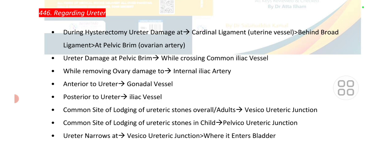During hysterectomy, the ureter is damaged at the cardinal ligament. If it is not present in the option, then choose behind the broad ligament. If that is also not present, then choose at the pelvic brim — ureter damage at the pelvic brim while crossing the common iliac vessels.